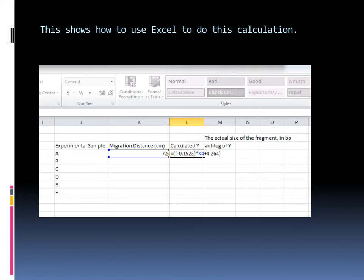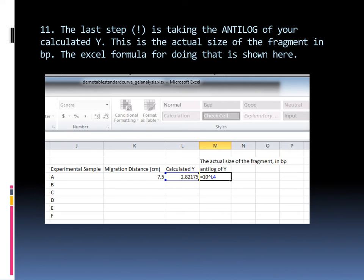Again, using Excel, I create a column where I put the experimental sample label. Here just A through F. I have a migration distance column in centimeters. I enter my 7.5 that I just measured into that. So I get this by measuring off the piece of paper. And then I'm going to actually calculate the Y value. And I'm going to use Excel to do that. Here I've got equals and I've input the equation. K4 is telling it to refer to this distance. You can do this on your scientific calculator, but it's easier and quicker to learn how to do these things in Excel. When we return that, we will get the log to the base 10 size of the fragment, which is still not the actual size of the fragment. So we returned and we got this value here.